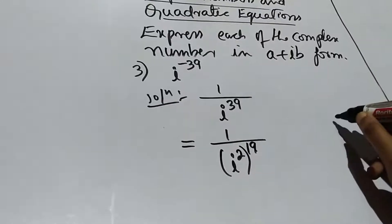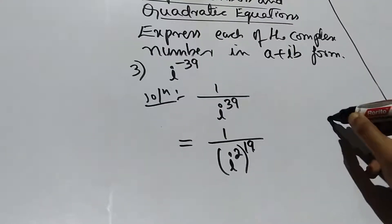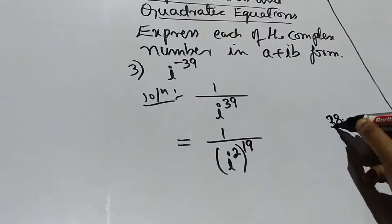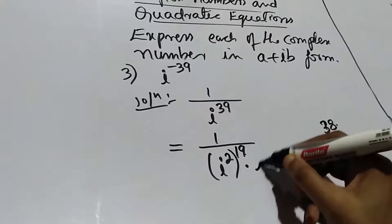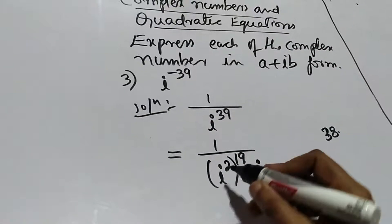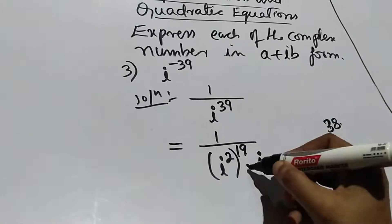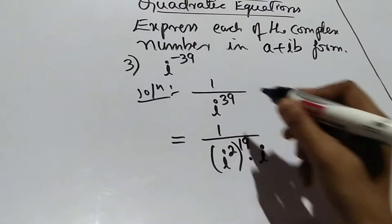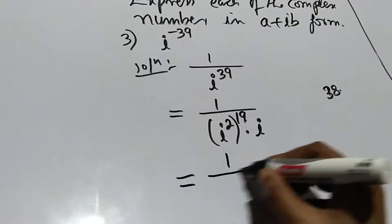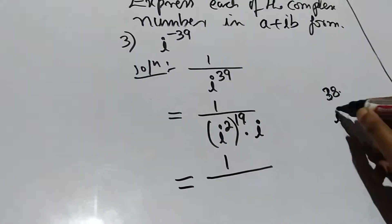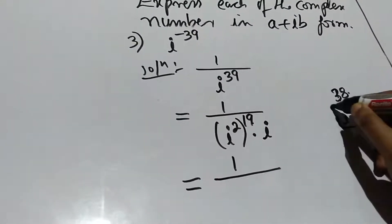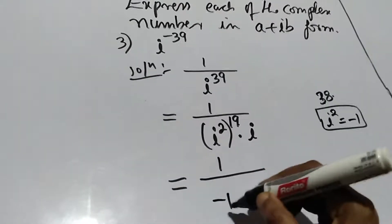Since 19 times 2 equals 38, we have i to the power 38 times i to the power 1, which equals i to the power 39. So the expression becomes 1 divided by i squared whole to the power 19 times i. Since i squared equals minus 1, this is 1 divided by minus 1 to the power 19 times i.